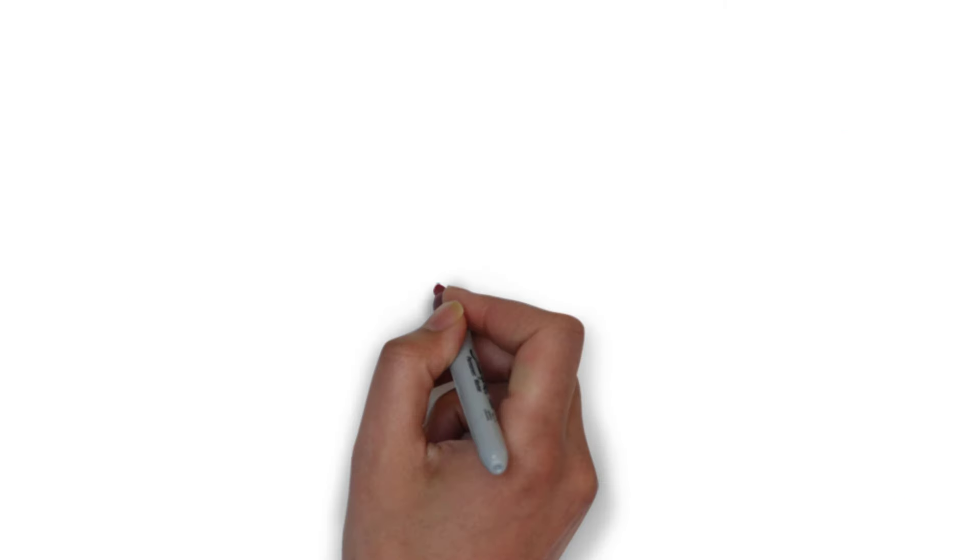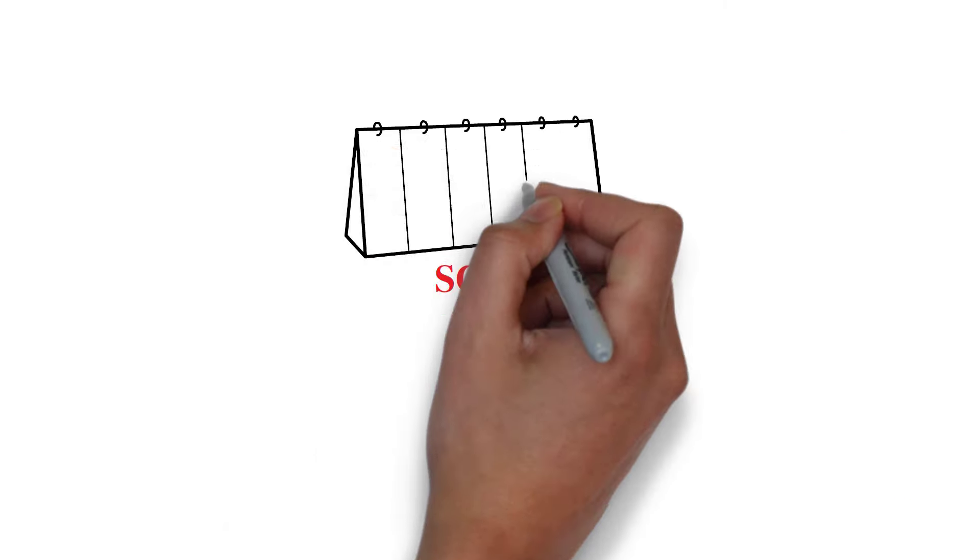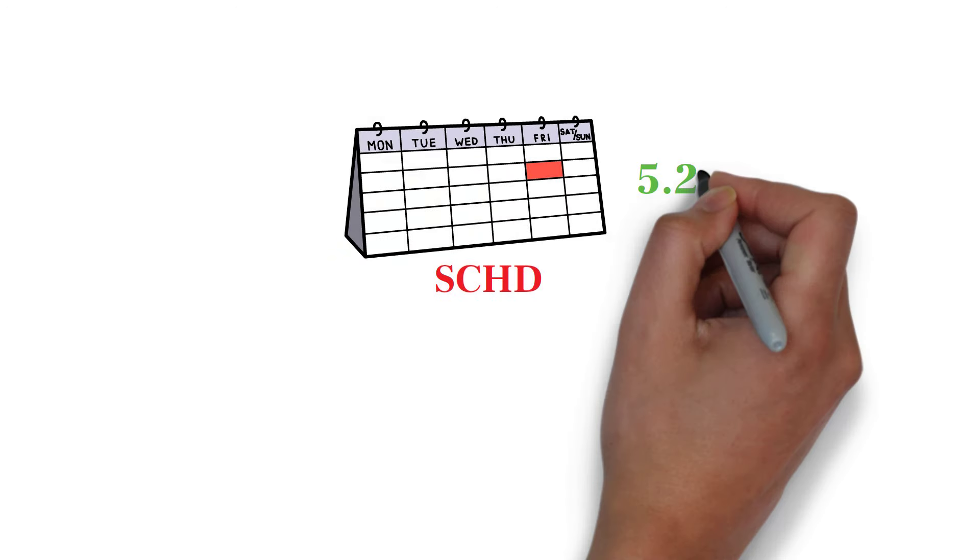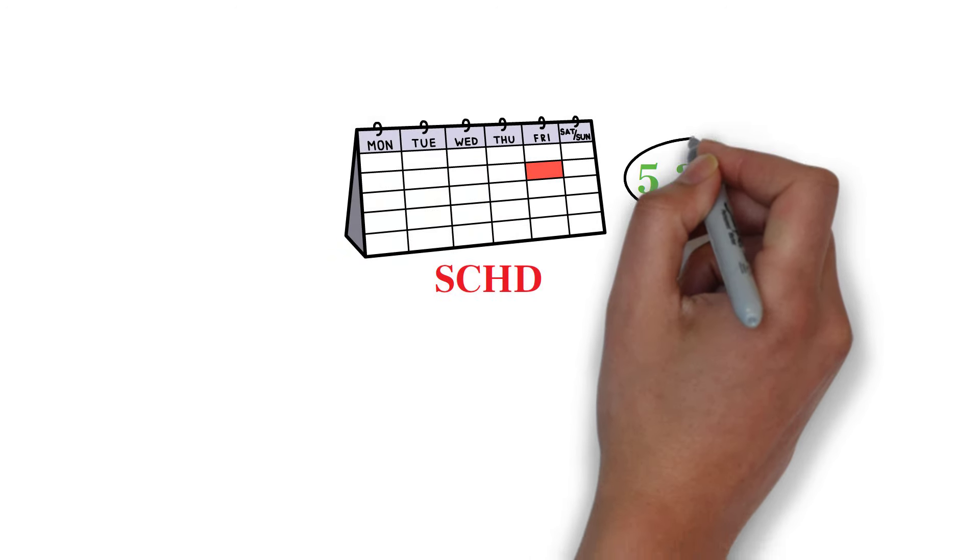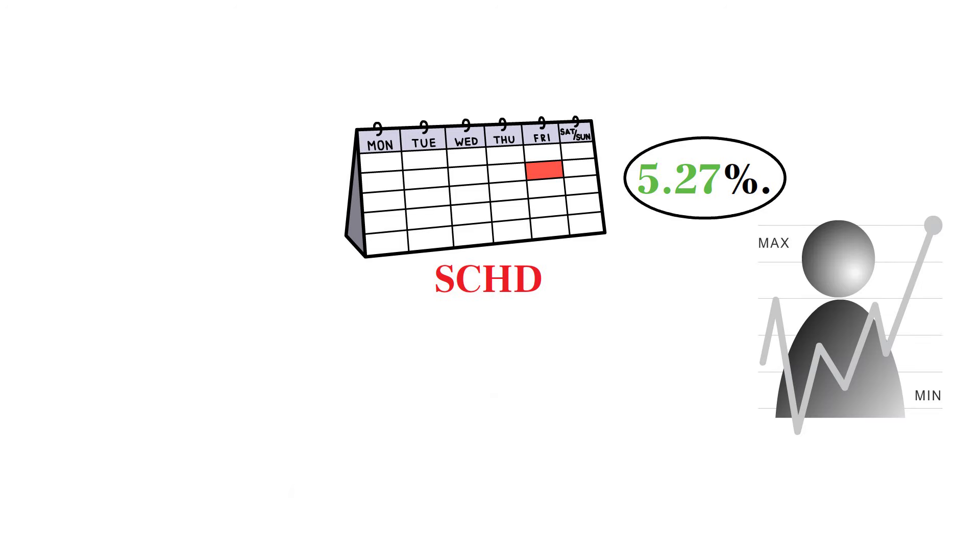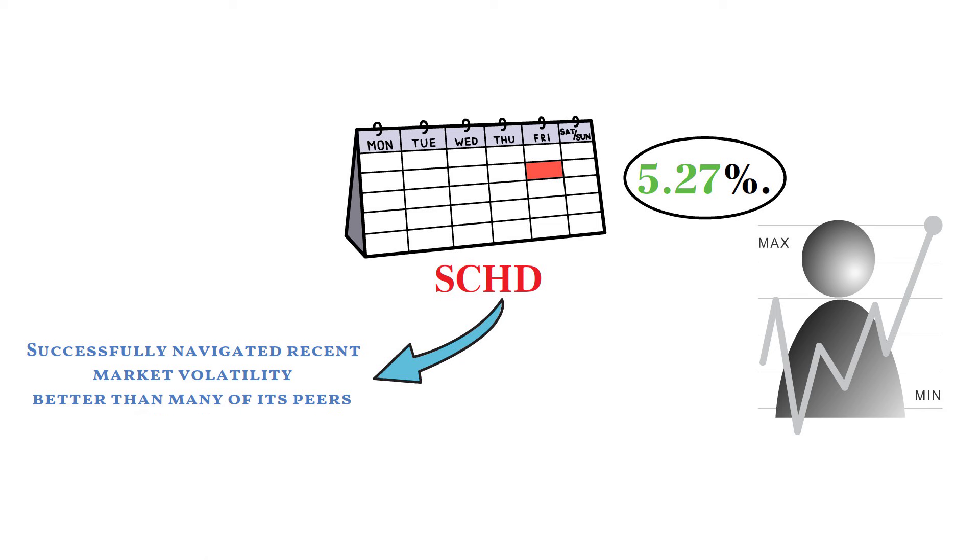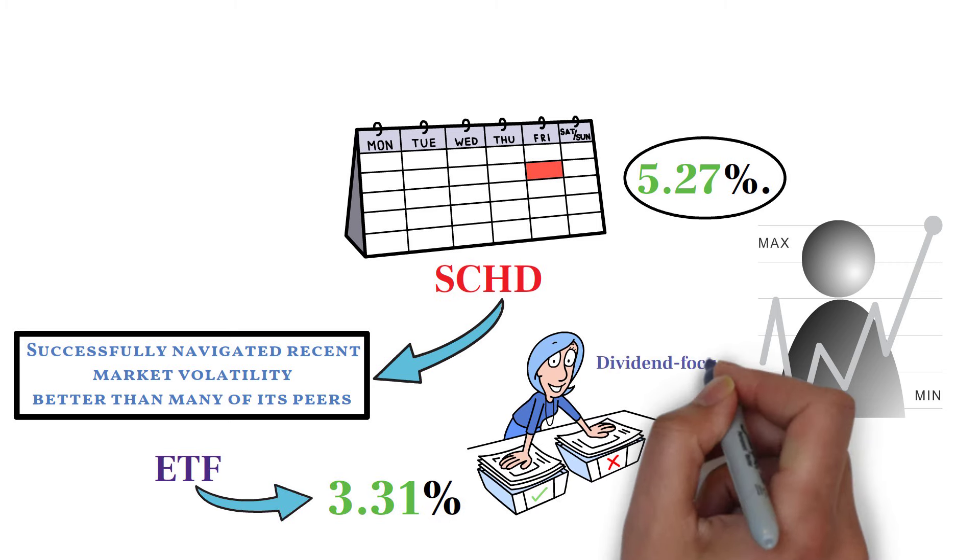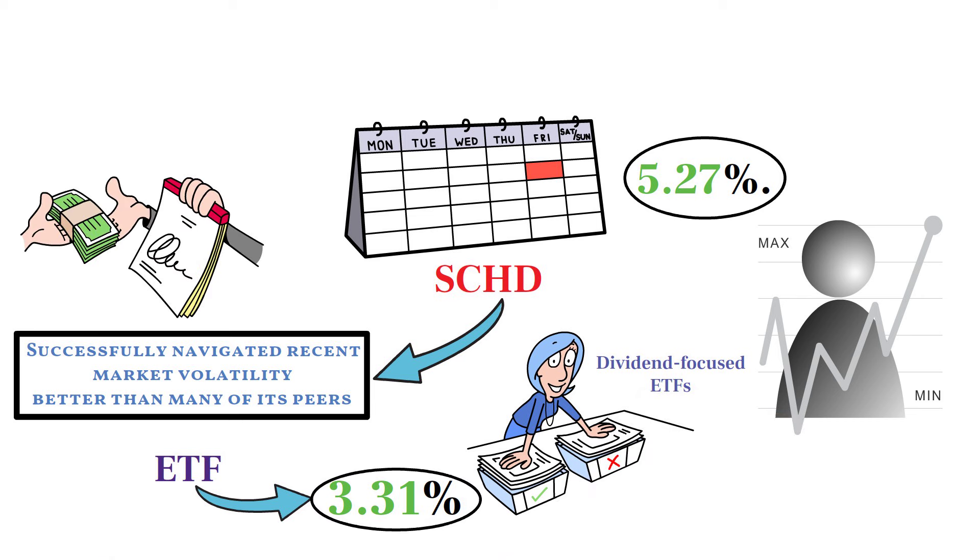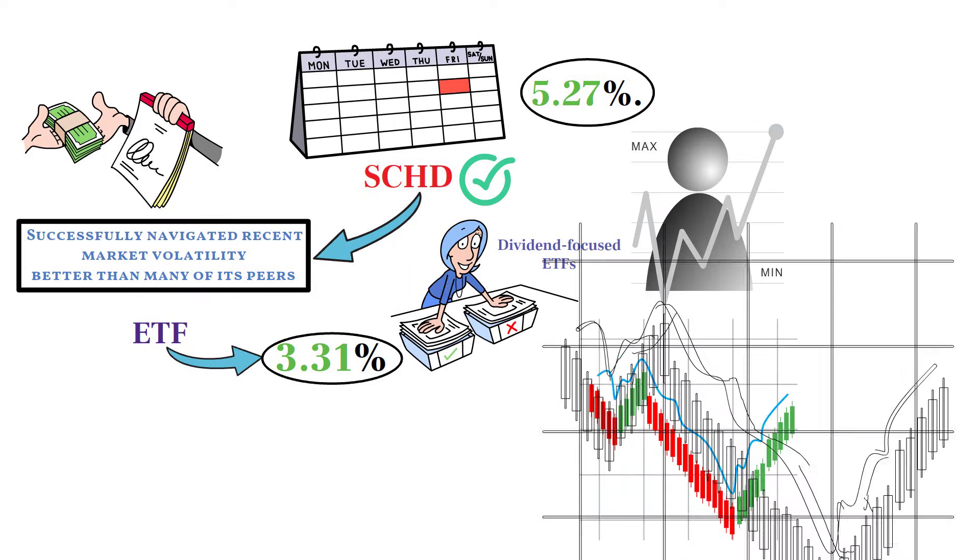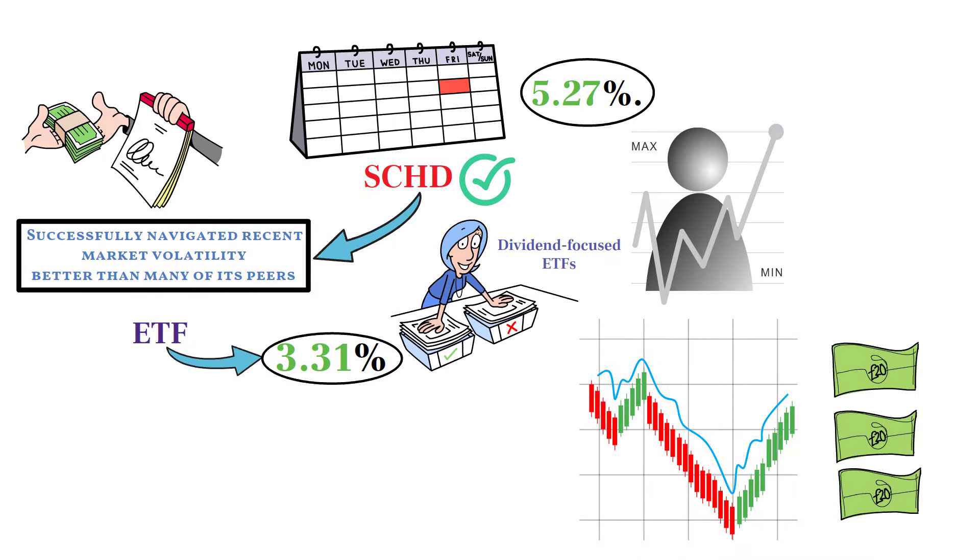SCHD has recorded a year-to-date daily total return of 5.27%. This figure is particularly notable given the broader market context, suggesting that SCHD has successfully navigated recent market volatility better than many of its peers. The ETF offers a current yield of 3.31%, which is highly competitive within the category of dividend-focused ETFs. This yield reflects not only the dividend payments from the underlying stocks but also SCHD's ability to maintain these payouts even in fluctuating market conditions.